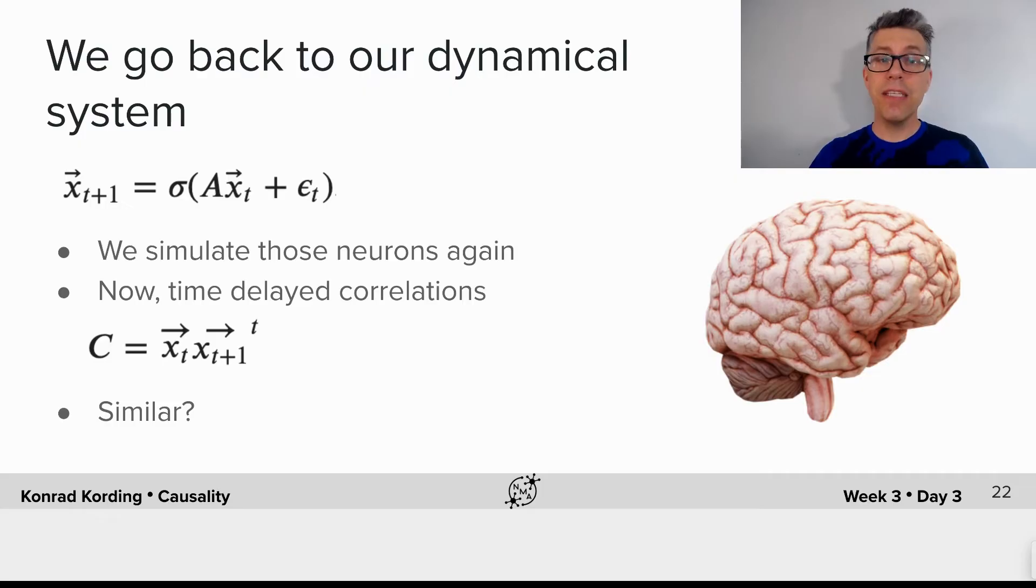Let's go back to our dynamical system again. We have the dynamics of the system here. We simulate those same neurons again, and we now look at time delayed correlations. Now like, this time delayed correlation is the part of the correlation that we might expect to be similar to causation. Well, are they similar to causation?